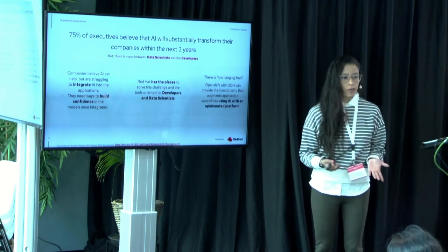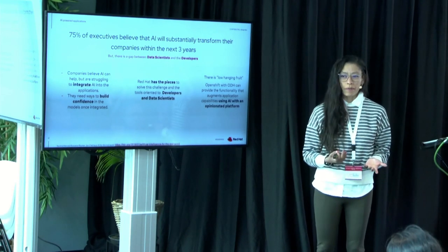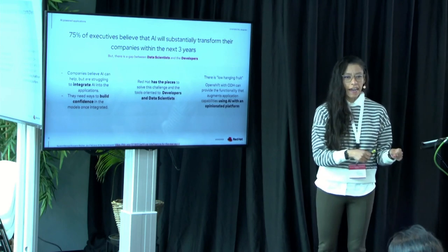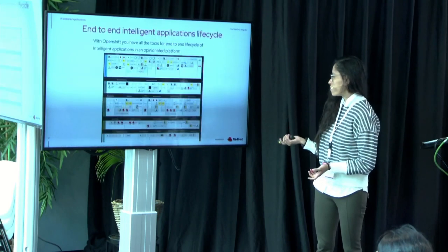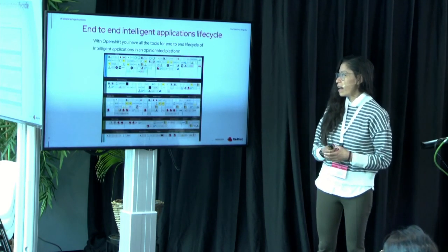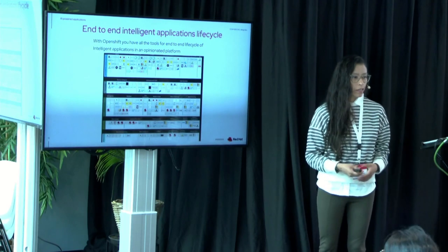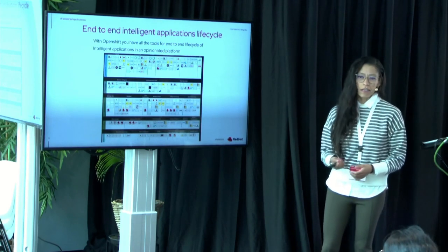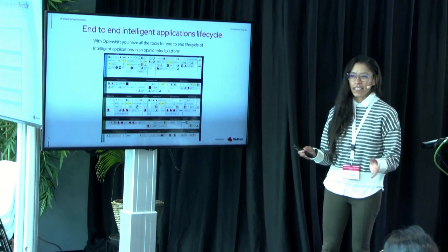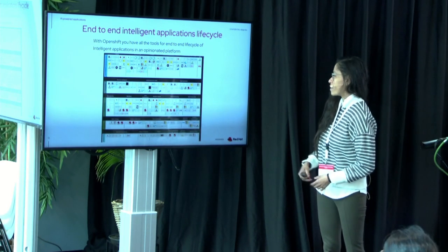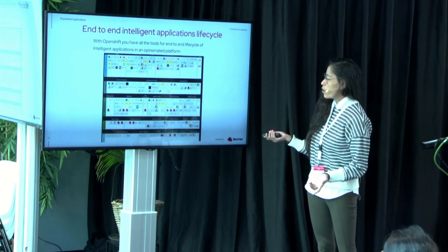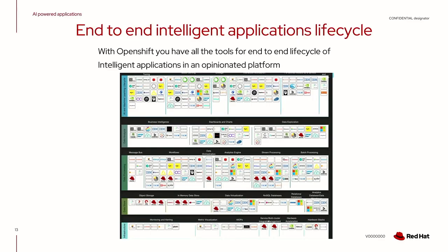Everybody is trying to use AI, but the problem is that taking AI out of the lab and putting it into the real world is one of the main challenges. We have a landscape full of products you can use, and these landscapes are getting overwhelming. You now need a landscape for the landscapes because there are so many. So if you're going to set up your own platform, how do you go about it? Which one do you choose?